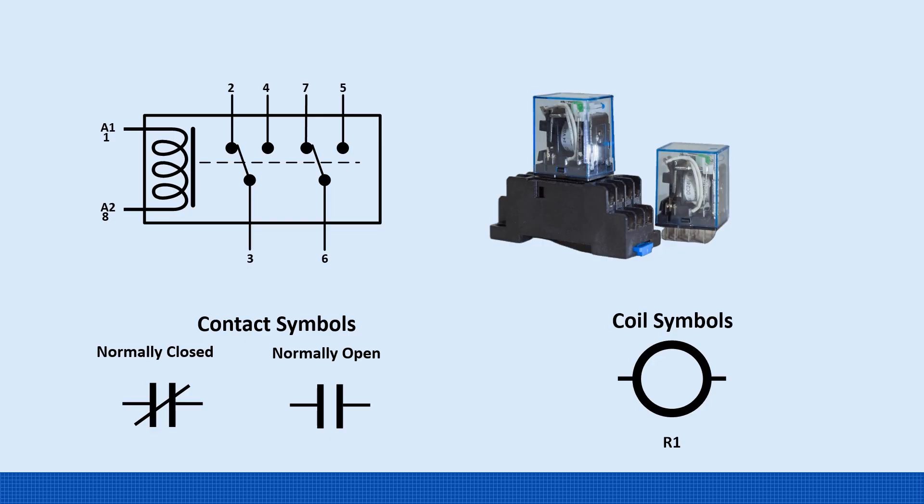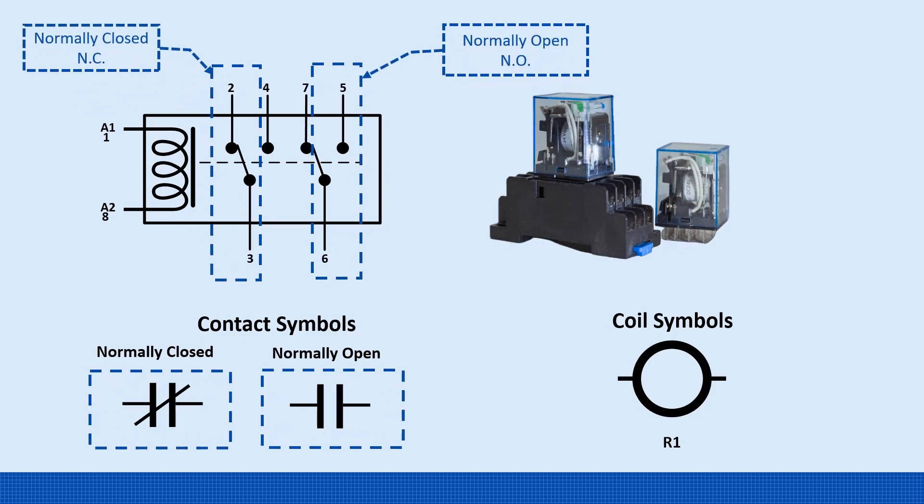When it comes to relays, we need to understand normally open and normally closed contacts. Normally open means the contacts are open when the device isn't powered, and they close when it's turned on. Normally closed is the opposite. The contacts stay closed when the device isn't energized, and they open when the device is activated.